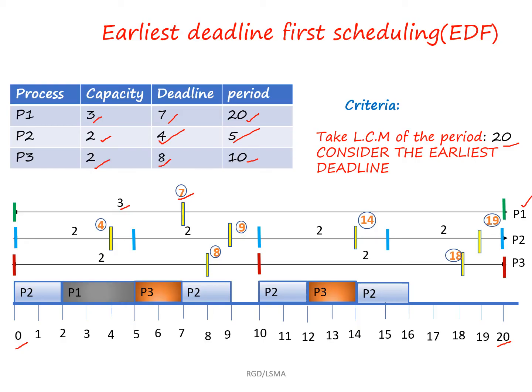For P2, for every 5-unit interval it has to execute 2 times, with deadline 4. So before deadline 4 it executes 2 times; then 4+5=9, so before 9 it executes 2 times; then 9+5=14, so before 14 it executes 2 times; then 14+5=19, so before 19 it executes 2 times.